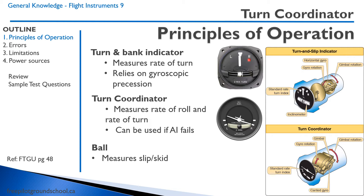So if the turn is uncoordinated — if we have too much rudder, for example — a slip would be like being on a bicycle: if we were to do a slipping turn on a bicycle, the bicycle would fall to the inside of the turn.